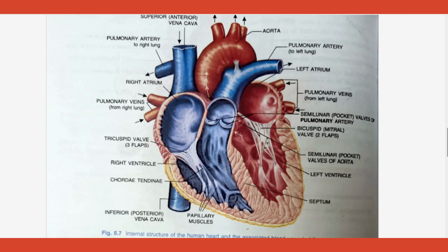On the left hand side, oxygenated blood comes — and oxygenation can happen only in the lungs. So the blood vessel coming into the left atrium is called pulmonary vein. Pulmonary means lungs — like a pulmonologist. So the pulmonary vein comes from the lungs and reaches the left atrium. From there, blood goes into the left ventricle.